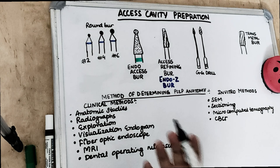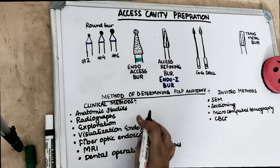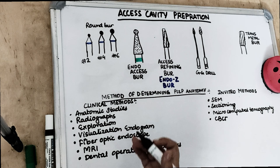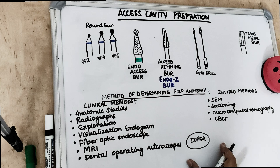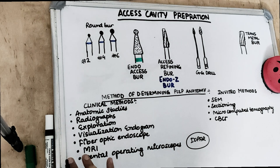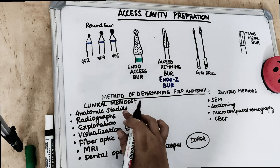Anatomical studies involve gaining knowledge from the anatomy of the root and the tooth — done by reading from books to understand root anatomy, pulp anatomy, and root canal anatomy. Radiographs are a useful method for assessing root canal anatomy, but IOPRs are a two-dimensional picture of a three-dimensional subject, so they don't exactly tell us the full canal anatomy. However, radiographs remain a good and useful method in day-to-day practice.